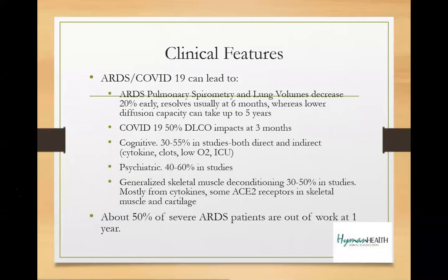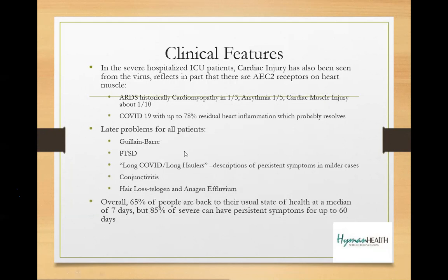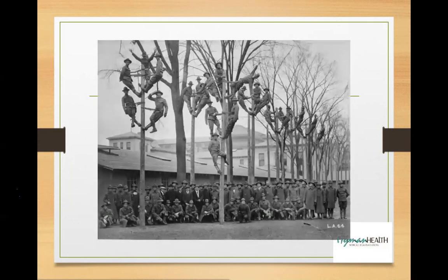ARDS matters for claims because that's when you start seeing long-term implications: reduced lung volumes, cognitive changes, psychiatric changes, muscular changes. At about six months, you can often have resolution; some cases take years. I sometimes say I need to re-evaluate somebody in three to six months because these take time to clear. Later problems include Guillain-Barré, PTSD, and long COVID — long haulers — which can all come up in claims.